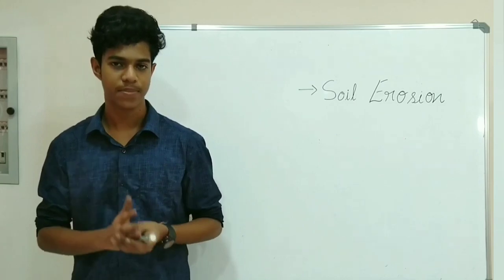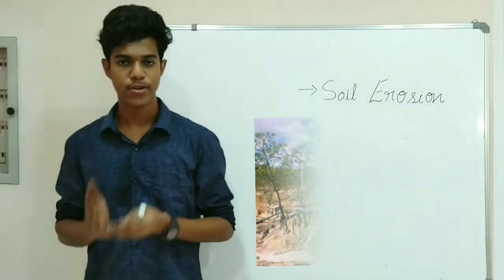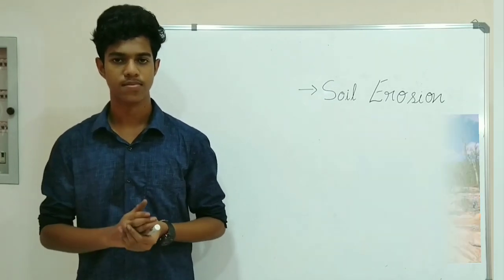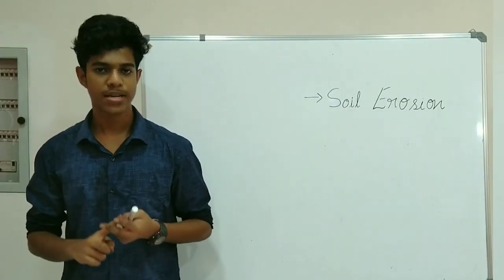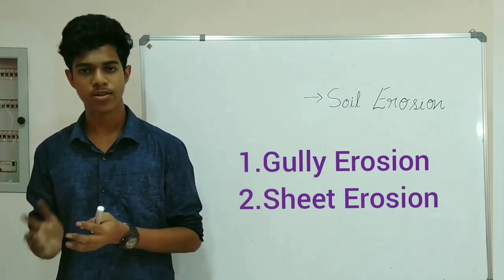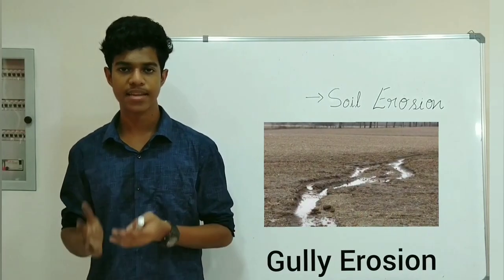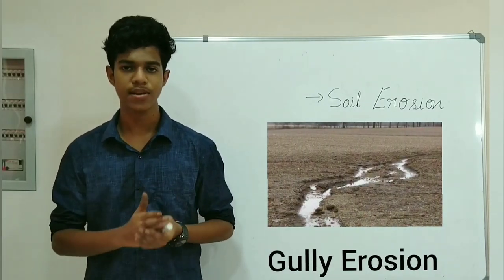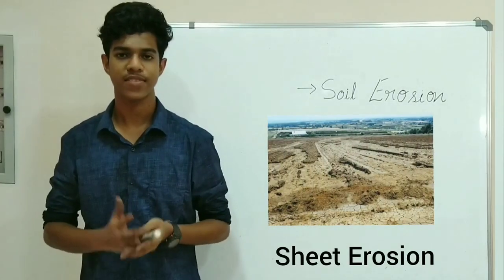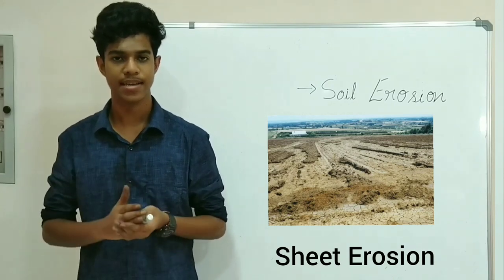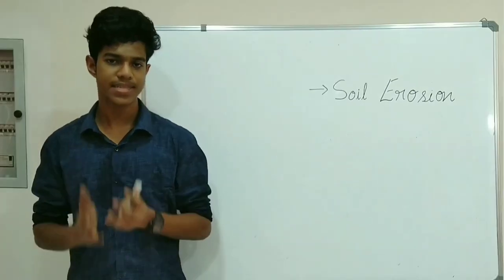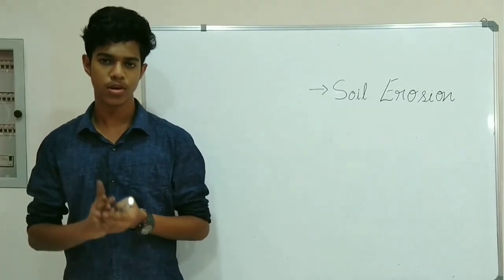The last topic of our chapter is soil erosion. The denudation of soil cover and subsequent washing away is called soil erosion. There are mainly two types: gully erosion and sheet erosion. Gully erosion occurs when running water cuts through clay soil and makes deep channels known as gullies. Sheet erosion occurs when running water flows as a sheet over a large area and the entire topsoil is washed away.